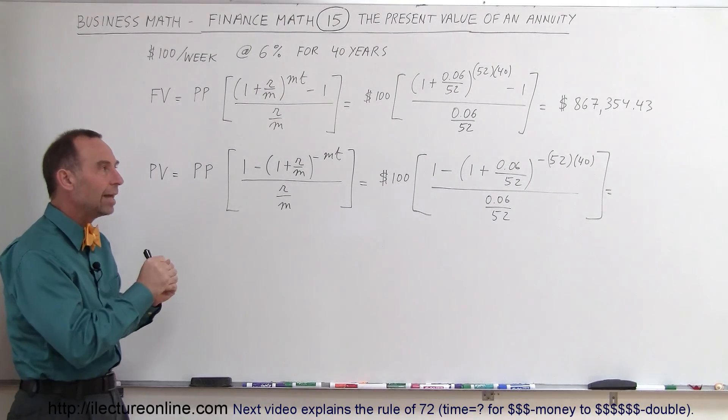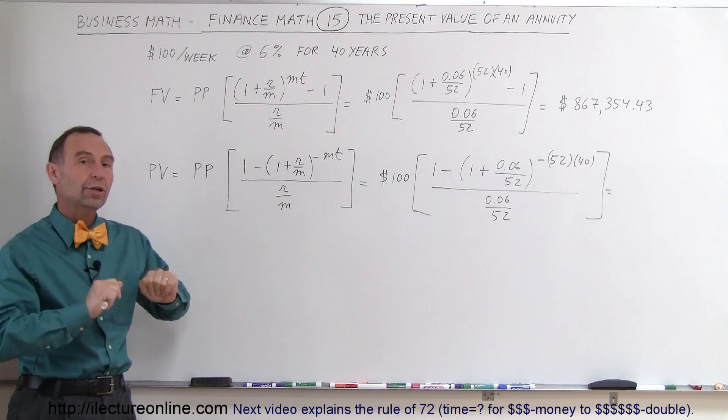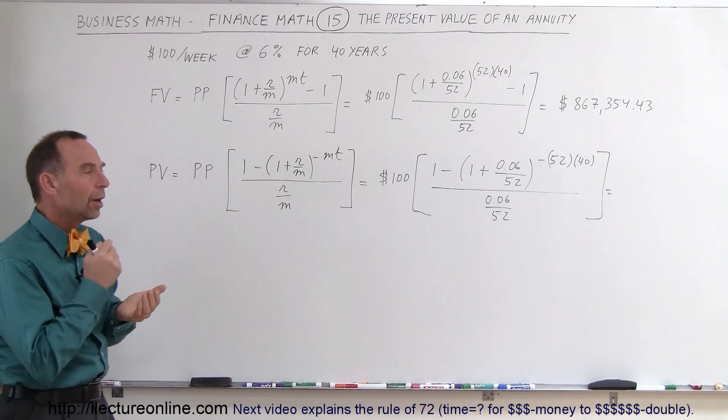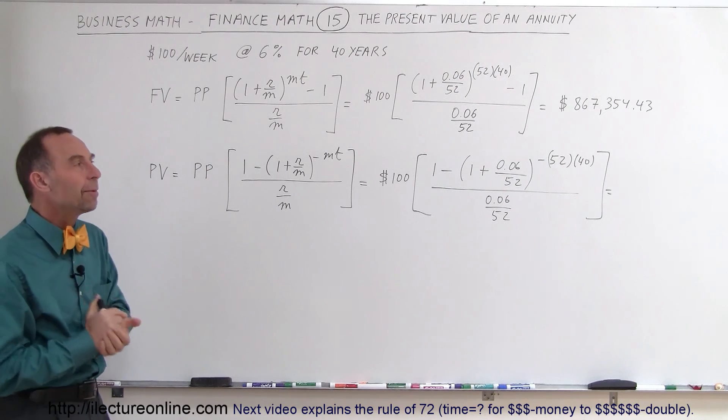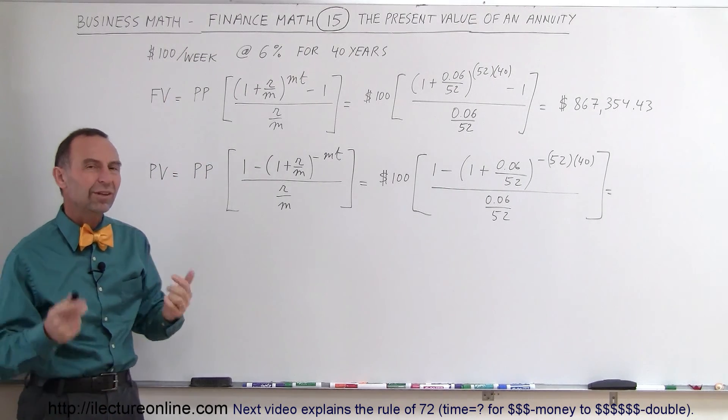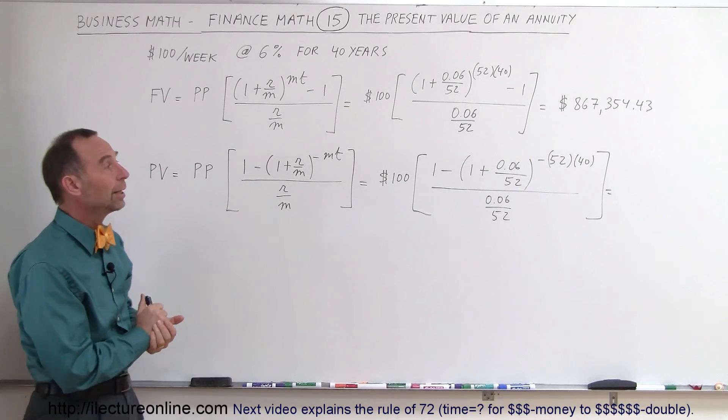How much cash do you need in your hand today so you could put it in the bank, not touch it for 40 years at 6% interest, compound it weekly, and you would end up with the very same amount as you would if you just put in $100 per week? That's called the present value of the annuity.